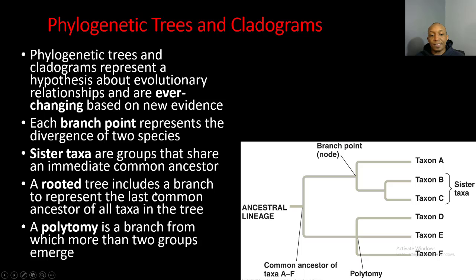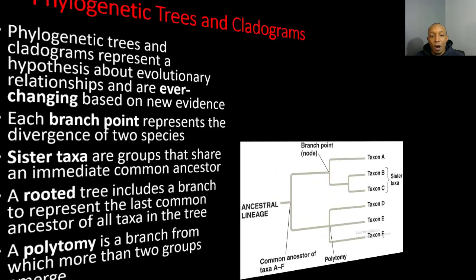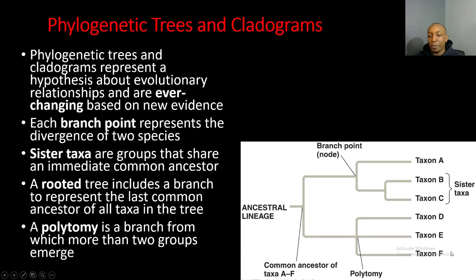Here's our ancestral lineage and here's our rooted tree branch right here. This is the common ancestor of all the following taxa over here to the right. A polytomy is a branch from which more than two groups emerge — taxon D, E, and F are a polytomy because you have more than two groups of organisms emerging.